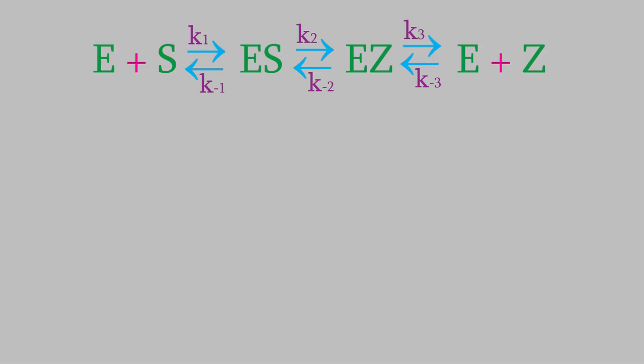The way I've written this series of reactions, it looks like there are three elementary reactions, each of which is a reversible reaction. But actually, we can make a few approximations that'll simplify this picture. First, the third reaction, in which the product dissociates from the enzyme, is extremely rapid, almost instantaneous. For that reason, we can treat the second two reactions as though they happen in one step, which gives us this.